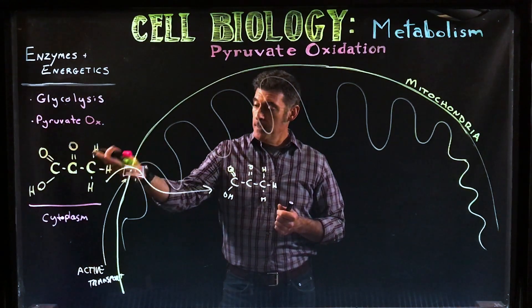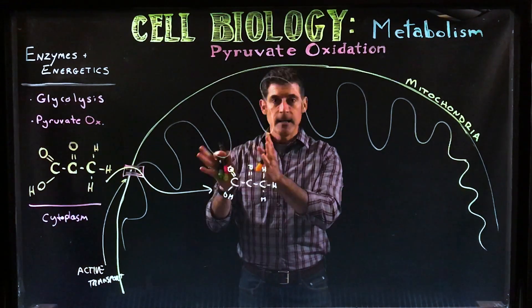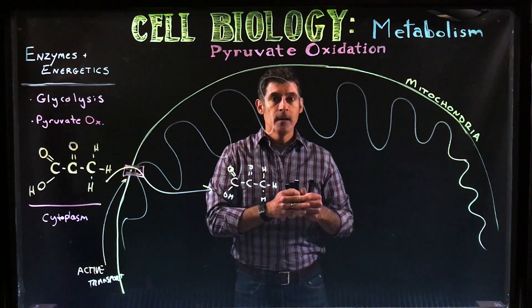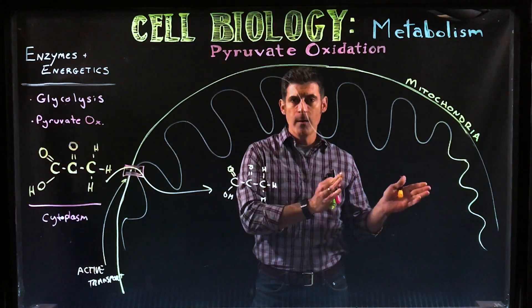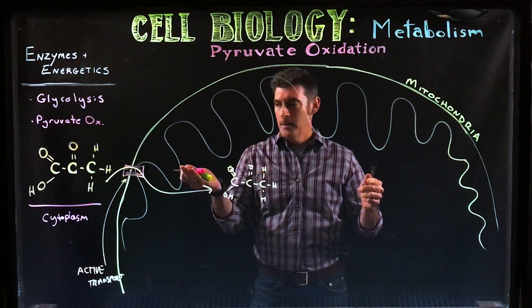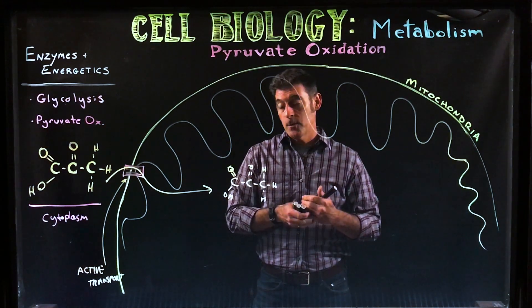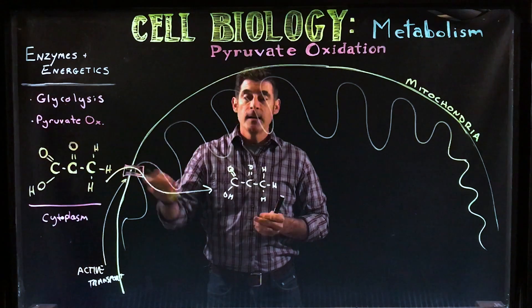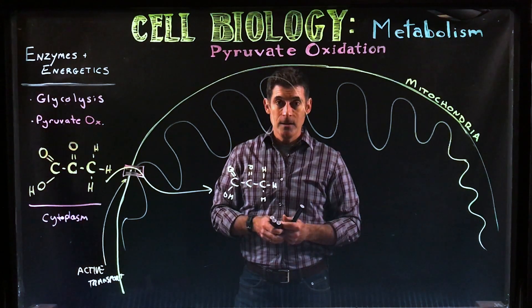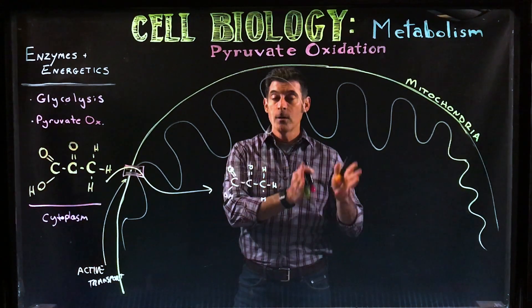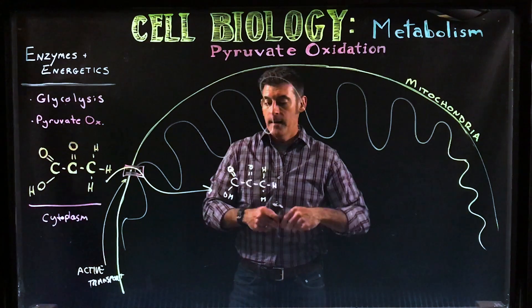This step is missed in a lot of places. Many textbooks go directly from glycolysis to the citric acid cycle, but glycolysis ends with pyruvate and the citric acid cycle begins with acetyl-CoA. The connection between them is right here in pyruvate oxidation. It's important not only because it's that bridge between the two reactions, but also because there's an oxidation event that makes NADH, storing more energy during this process.